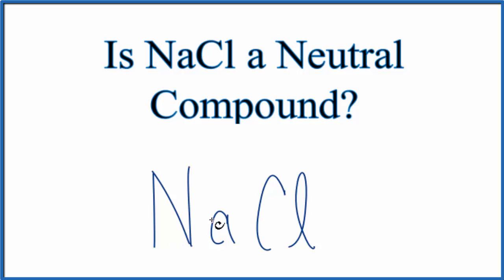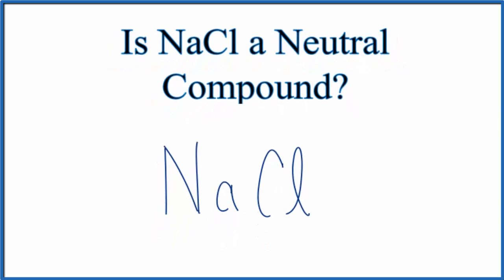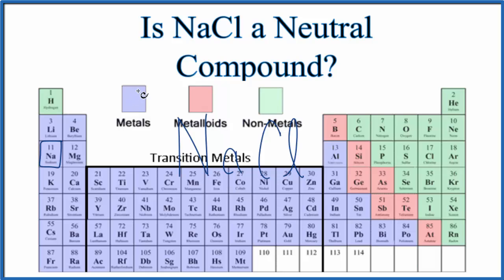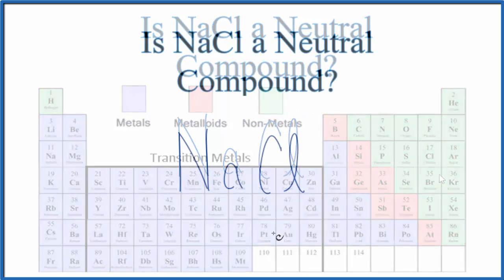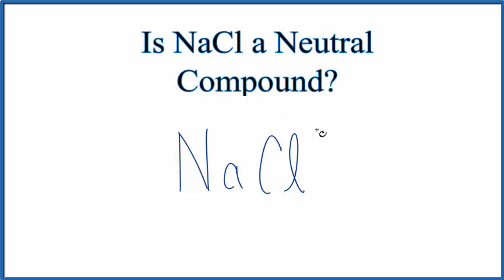But if we look at the type of elements we have here on the periodic table, we have sodium — that's a metal — and then over here, chlorine — that's a nonmetal. When we have a metal and a nonmetal, that's usually an ionic compound. So this is going to be made up of ions, and ions have a charge; they aren't neutral.